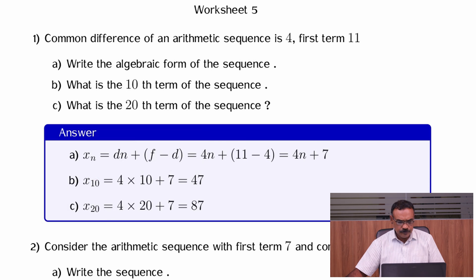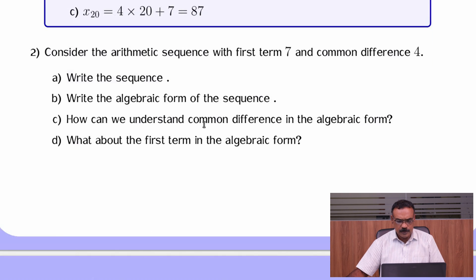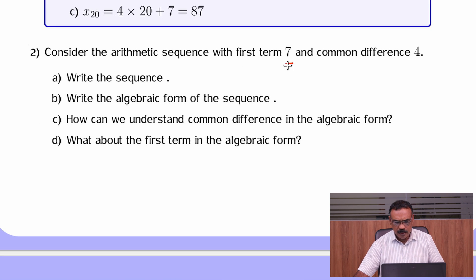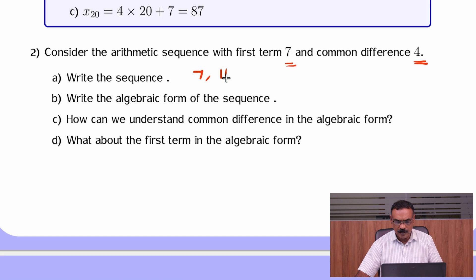Consider the arithmetic sequence with first term 7 and common difference 4. First term 7 and common difference 4. Write the sequence: 7, 11, 15, 19. This is the sequence.